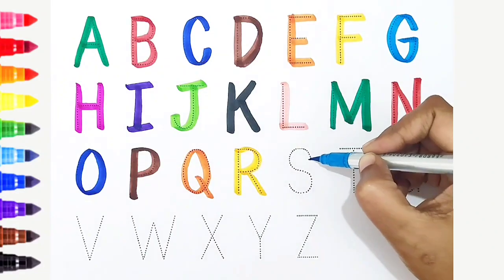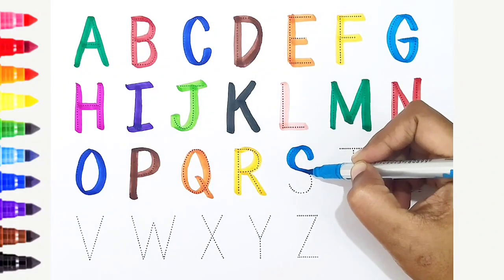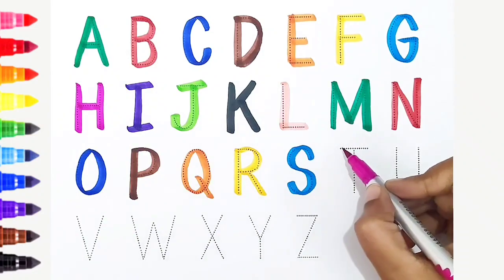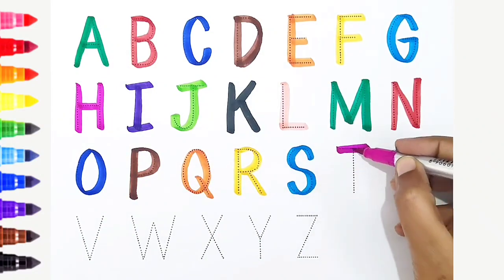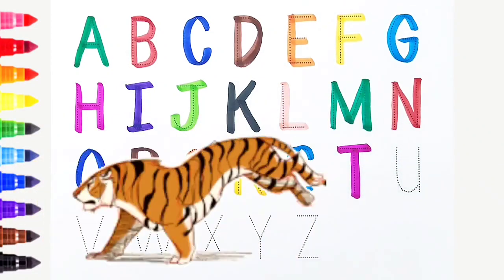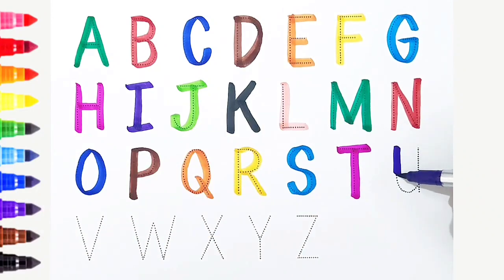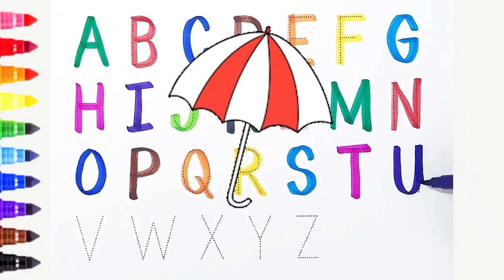S, light blue color, S is for sun. T, dark pink color, T is for tiger. U, violet color, U is for umbrella.